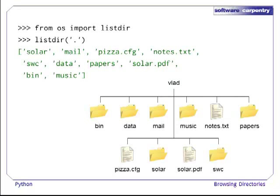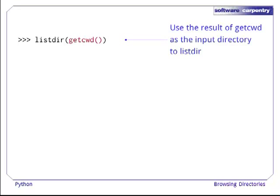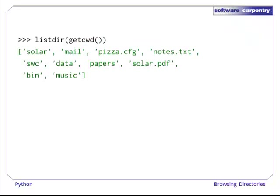Listdir returns a list of the contents of the current directory. Note that the files and directories in the list are not in alphabetical order. Instead of using the dot convention for the current directory, it's cleaner and more portable if we use getcwd. As we can see, the result is the same.